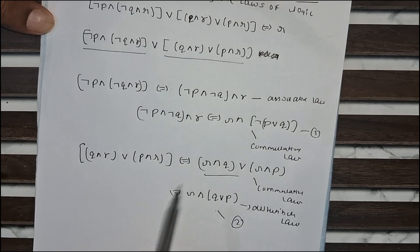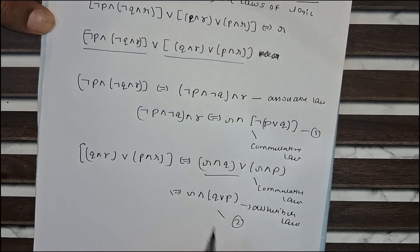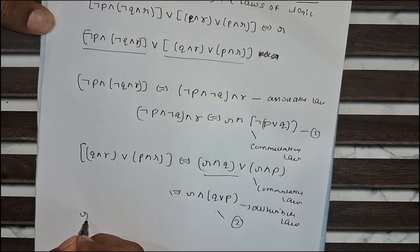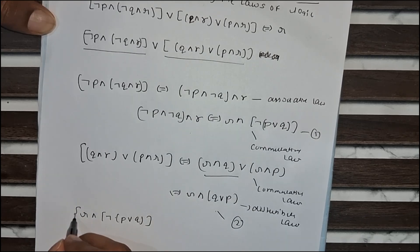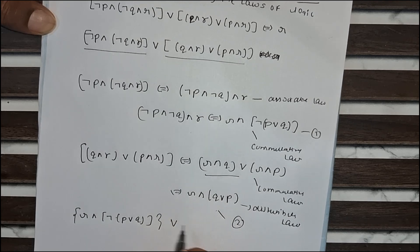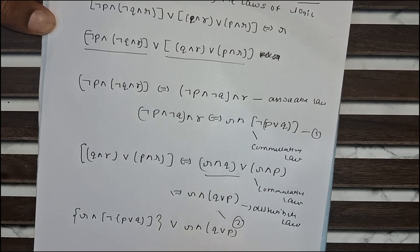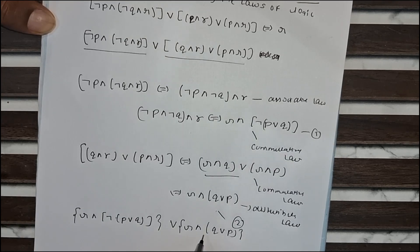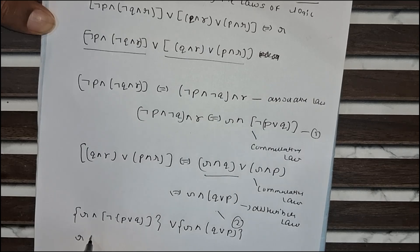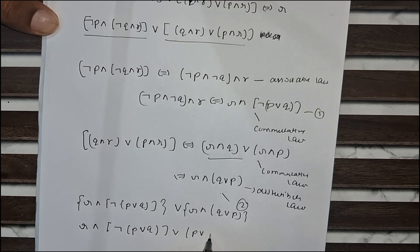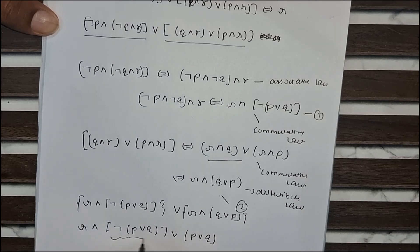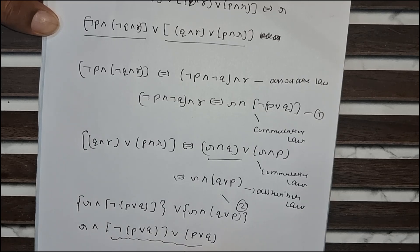So now we take equation one disjunction with equation two. What is our equation one? R disjunction whole negation P disjunction Q, which is disjunction with the second equation R disjunction Q disjunction P. Now from both parts we take R as a common. What remains is R conjunction negation P disjunction Q disjunction P disjunction Q. This expression now relates to a tautology.